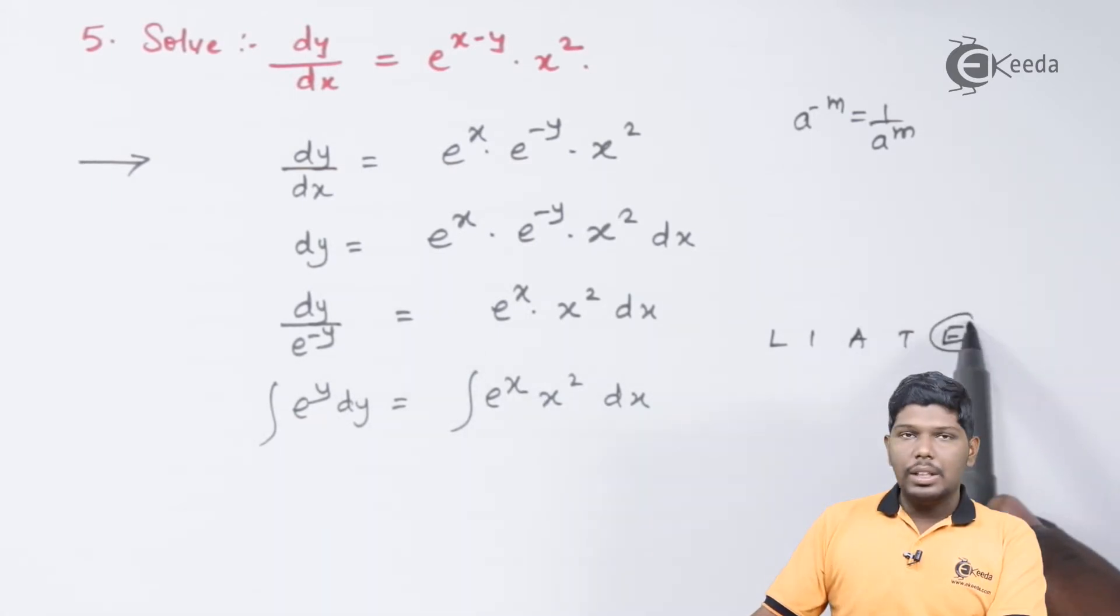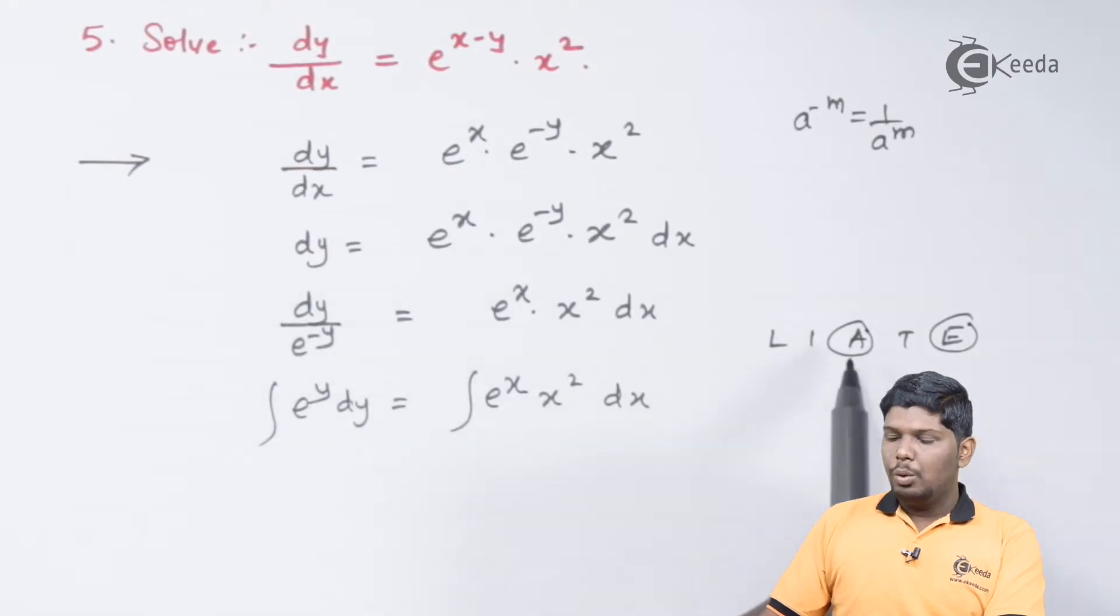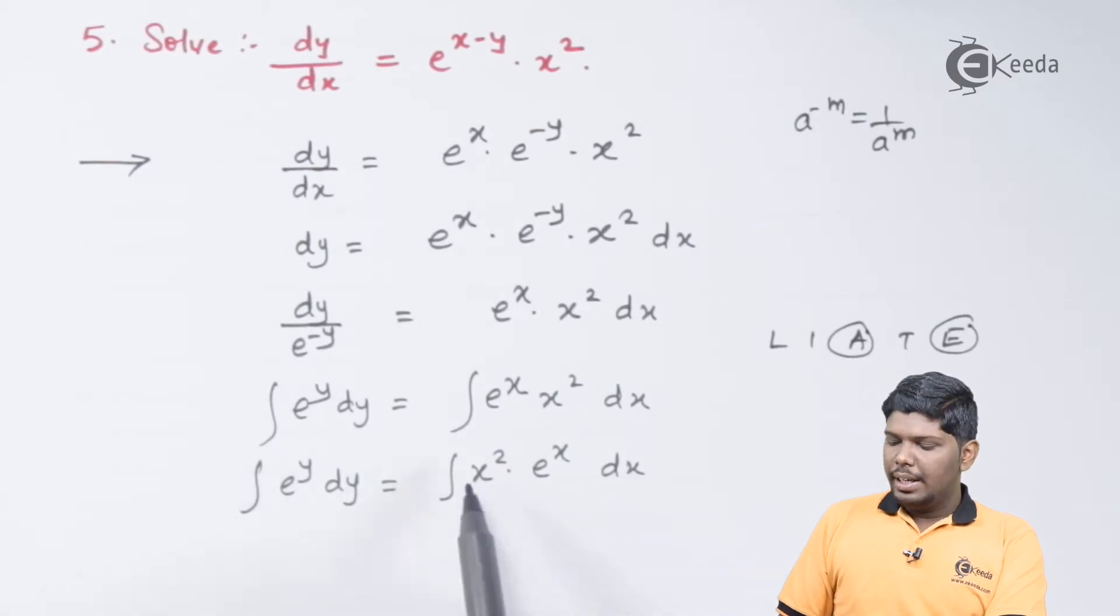e raised to x is an exponential function and x squared is an algebraic function. So, first, we need to write algebraic function and then followed by an exponential function. Now, considering x squared as u and e raised to x as v,